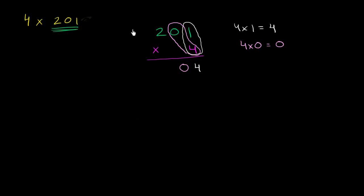And then last, we have 4 times this 2 right over here. And so 4 times 2 is equal to 8. And we put the 8 right over here. And we get our answer, 804.